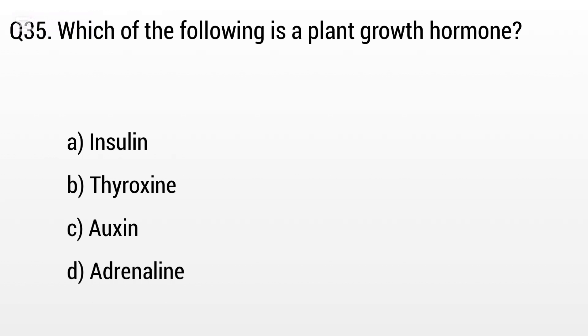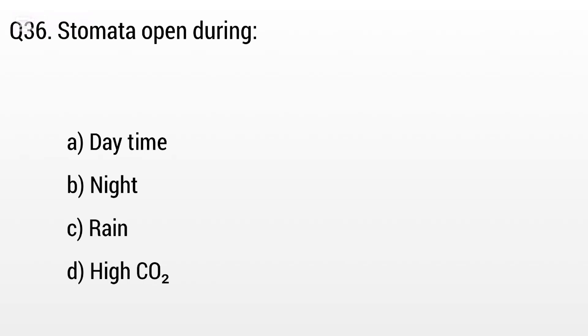Question 35. Which of the following is a plant growth hormone? Option A: Insulin, B: Thyroxine, C: Auxin, D: Adrenaline. The right answer is option C, Auxin.